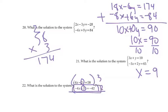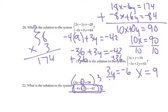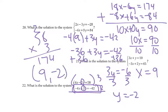Plug that back into one of these equations: negative 4 times 9 plus 3y equals negative 42. That would be negative 36 plus 3y equals negative 42. Add 36, so 3y equals negative 6. Divide by 3, and y would equal negative 2. So my answer is (9, negative 2).